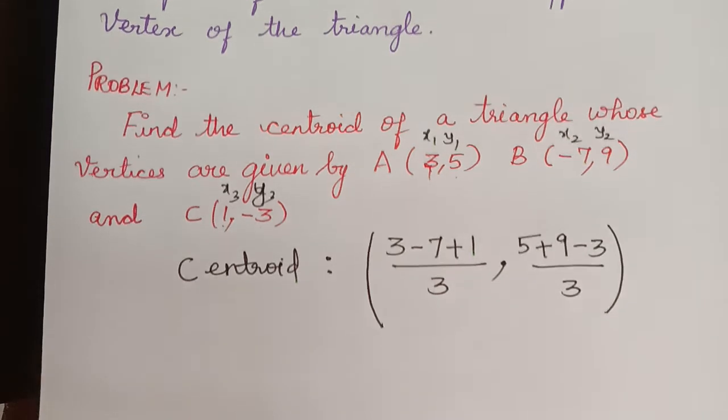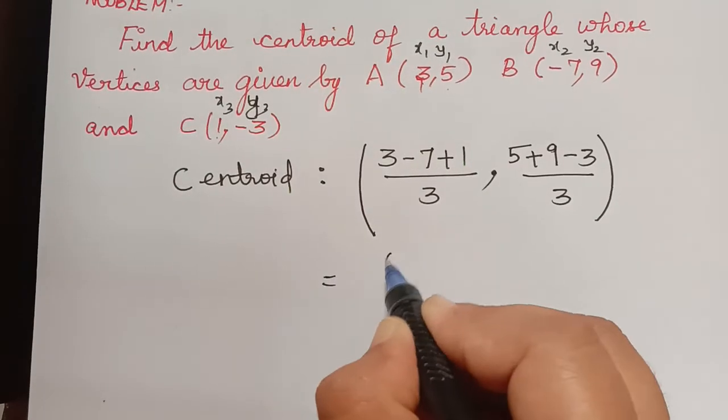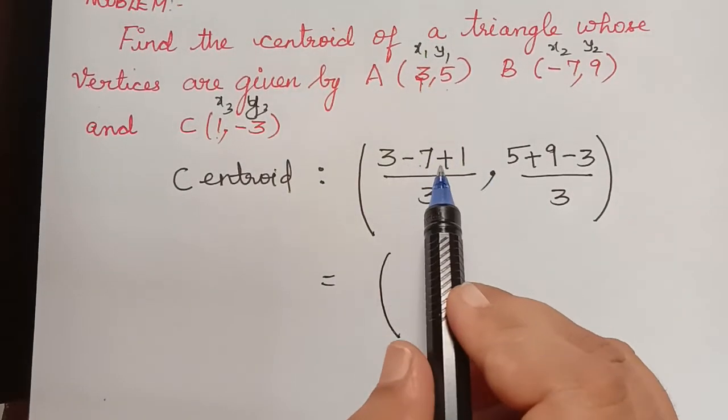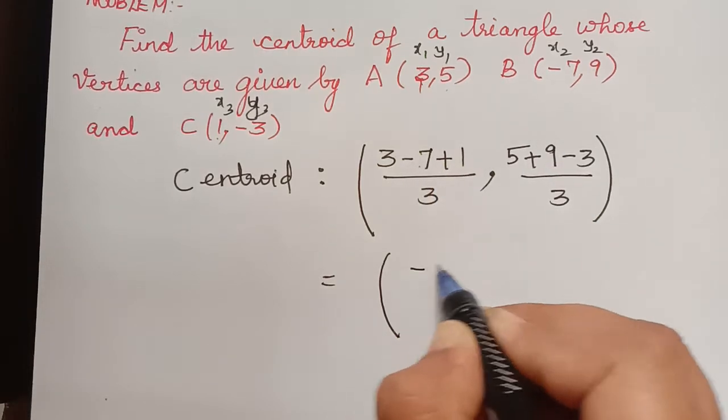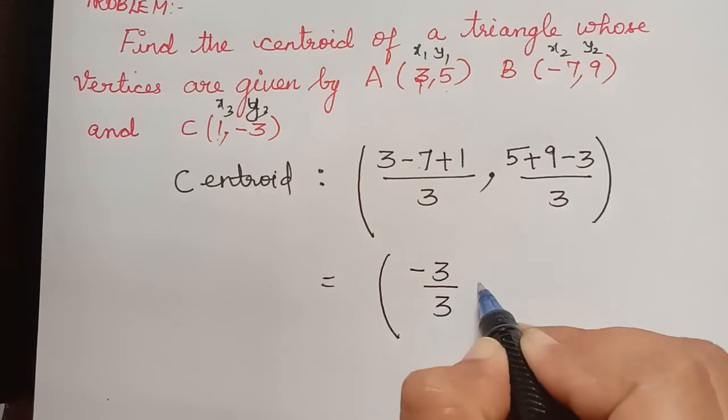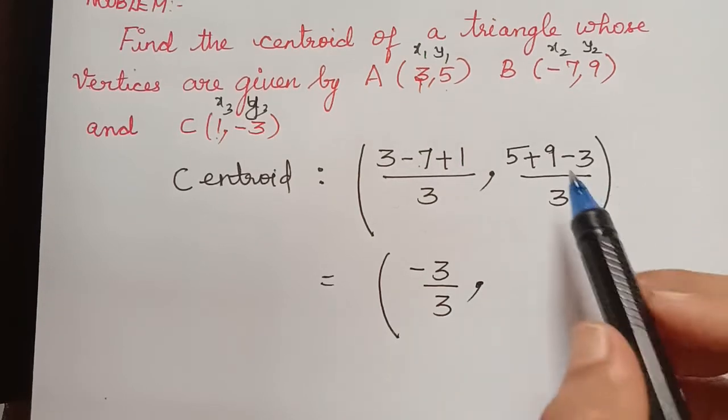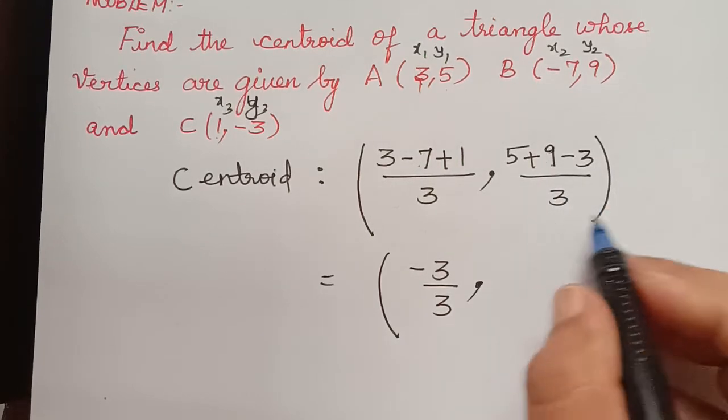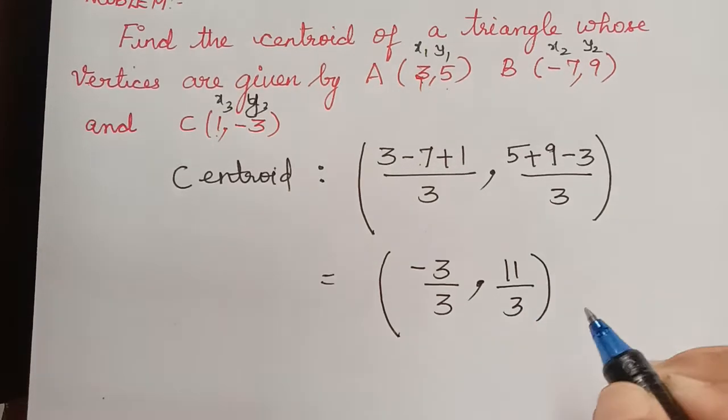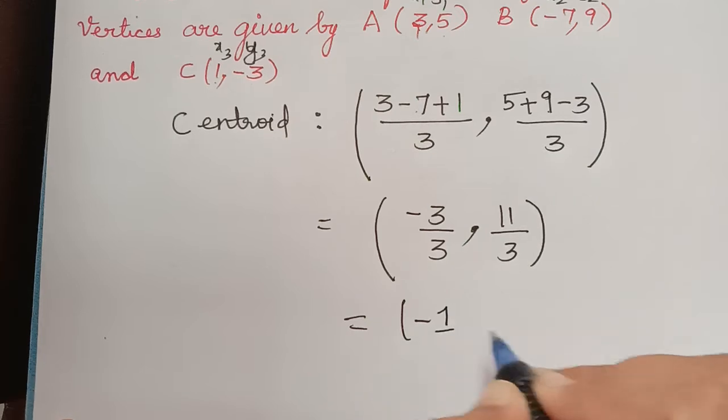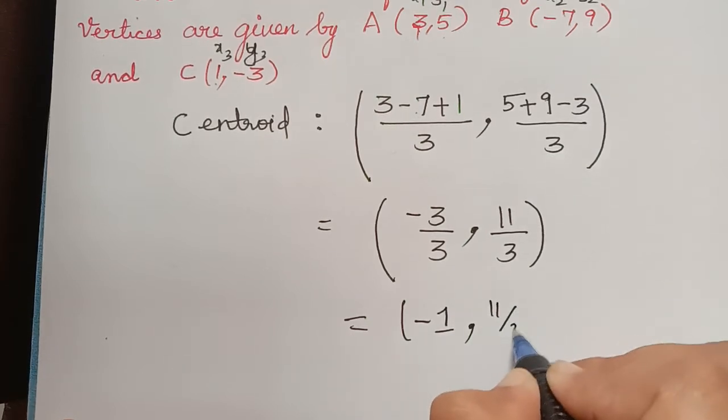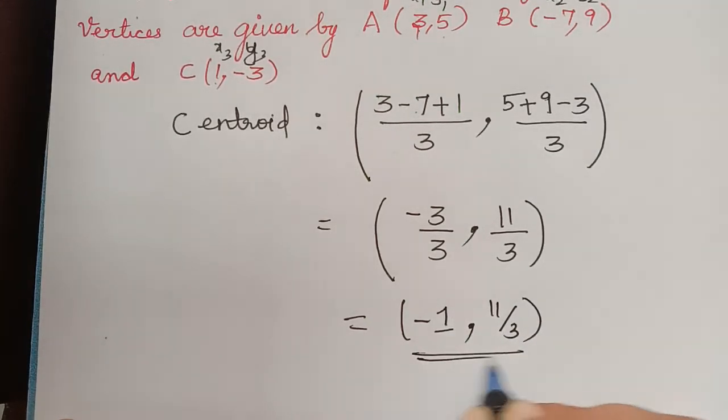So that will be 3 minus 7 plus 1 is minus 3. So minus 3 divided by 3, comma and here 5 plus 9 minus 3 is 11. So 11 by 3. And therefore the centroid of this triangle is minus 1, comma 11 by 3. So this is the answer.